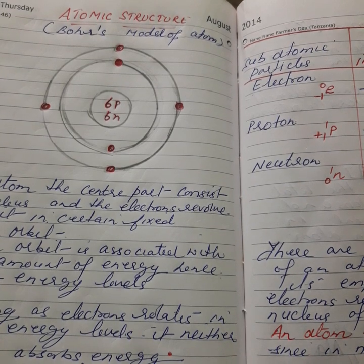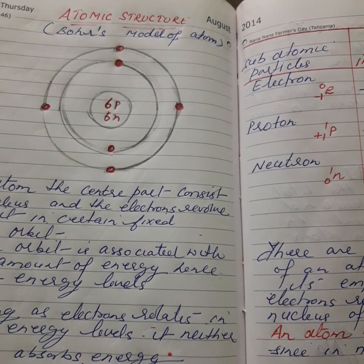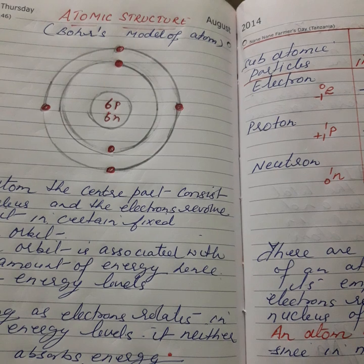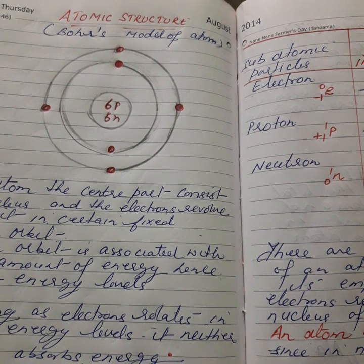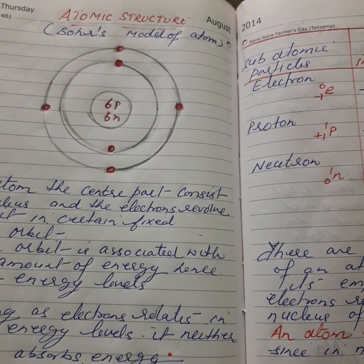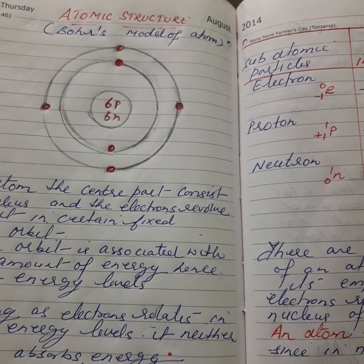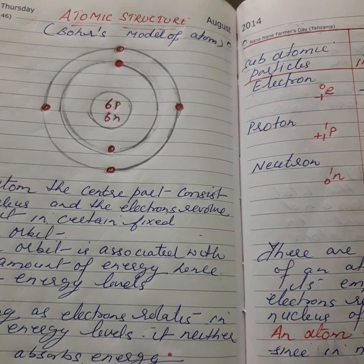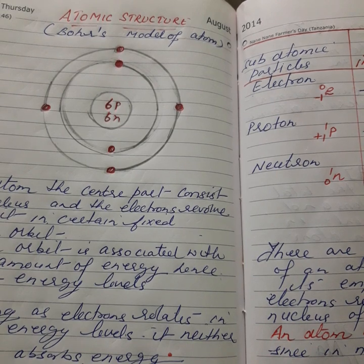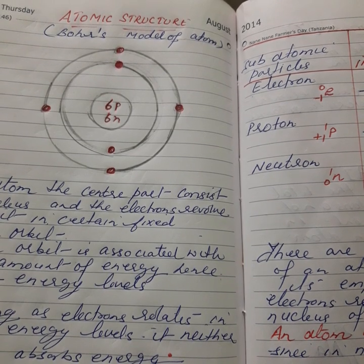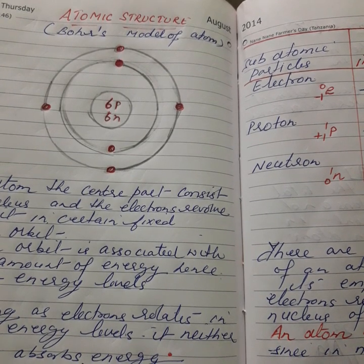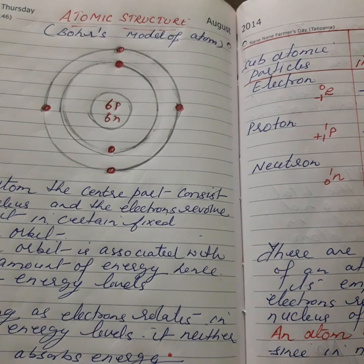Rutherford compared the atom with the solar system. Just as in the solar system the sun is at the center and the planets revolve around it, in an atom the nucleus is at the center and electrons revolve around it. This is given by Rutherford's atomic model.